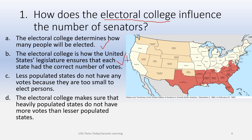Choice C: less populated states do not have any votes because they are too small to elect persons. This is exactly the opposite. Each state has to have an amount, but the amount is based on the number of people in the state. So this is the opposite of what was said. You definitely don't want to check choice C.